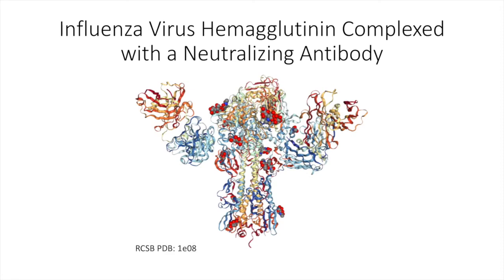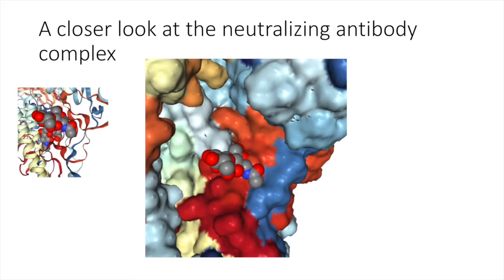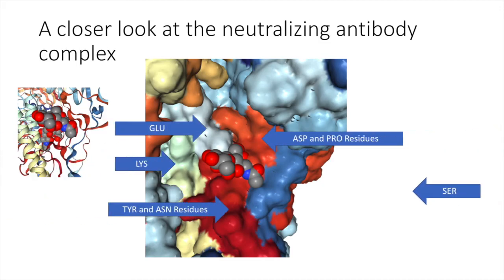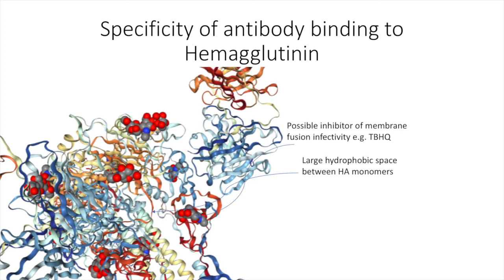Hemagglutinin interacts when complexed with a neutralizing antibody. There are several residues that an antibody can target to achieve high specificity of binding and inhibit hemagglutinin functionality. These residues include glutamic acid, lysine, tyrosine, asparagine, aspartic acid, proline, and serine. The presence of antibody prevents membrane fusion, but antibody efficacy is still fairly low. A known inhibitor of membrane fusion infectivity, terbutylhydroquinone, binds hemagglutinin within the large hydrophobic space between HA monomers. With further research, the efficacy of such inhibitors may be improved to make it easier to prevent the influenza virus from spreading.